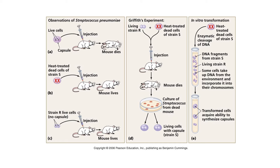Griffith's lab had two strains of Streptococcus pneumoniae: what they called an S or smooth strain — colonies growing on an agar plate would look smooth to the naked eye, and this strain produced a capsule — and what they called the R or rough strain, whose colonies looked rough to the naked eye and did not produce a capsule.